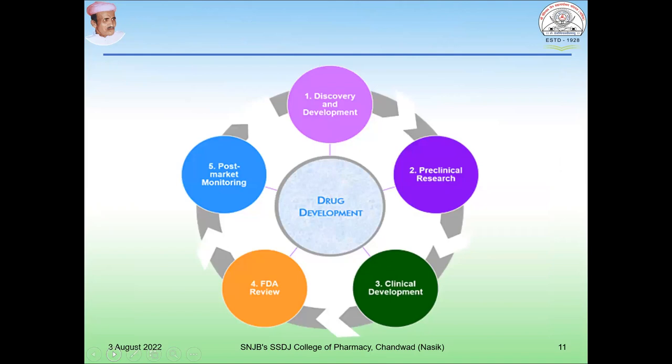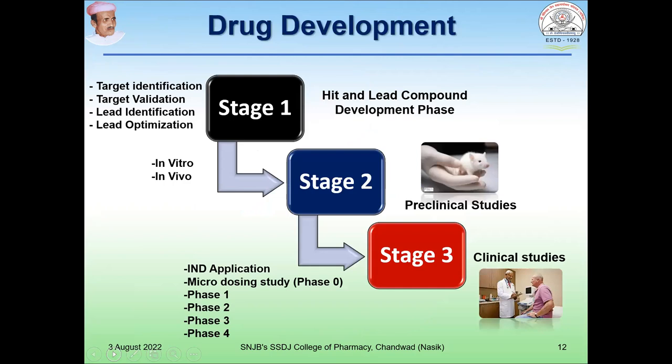There is a process of drug development. The first step is drug discovery and development, then pre-clinical research, clinical development, FDA review, and post-market monitoring. In drug development, there are three main stages. The first stage is the drug development phase in which hit and lead compounds are discovered, involving target identification, target validation, lead identification, and lead optimization.